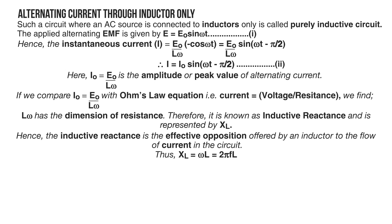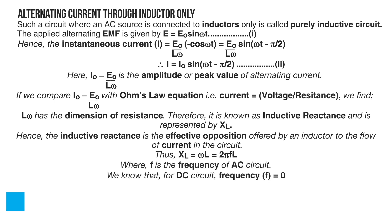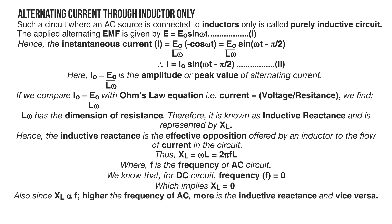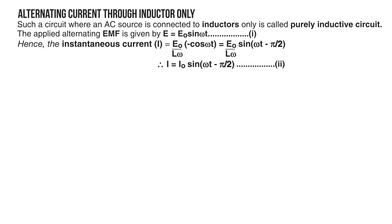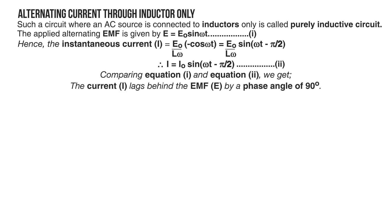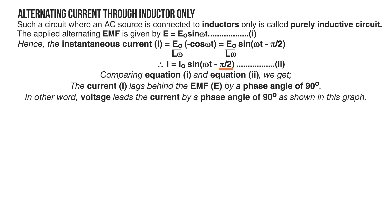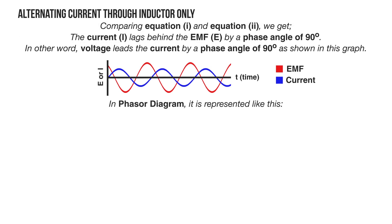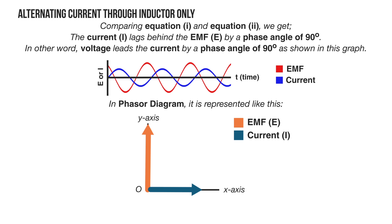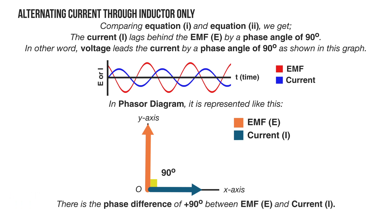Thus X_L = ωL = 2πfL, where f is the frequency of the AC circuit. For DC, f = 0, which implies X_L = 0 — a pure inductor offers zero resistance to DC. Since inductive reactance is directly proportional to frequency, higher AC frequency means greater inductive reactance, and vice versa. Inductive reactance is measured in ohms. Comparing equations 1 and 2, the current I lags behind the emf E by a phase angle of 90°; equivalently, voltage leads current by 90°, as shown in the graph and phasor diagram. In the phasor diagram, emf E makes an angle of +90° with the reference vector current I.